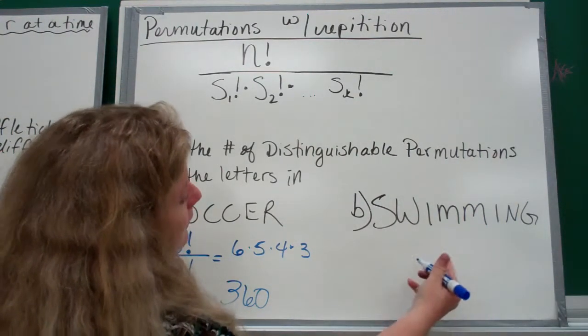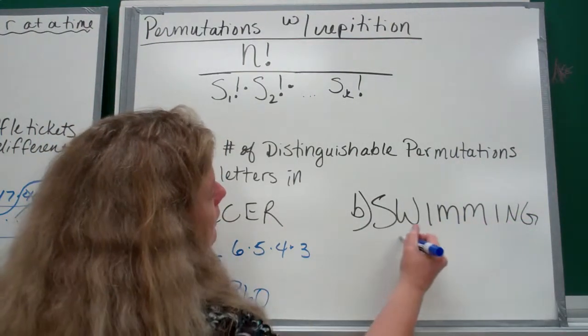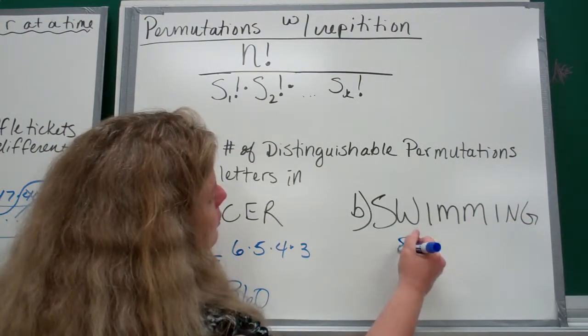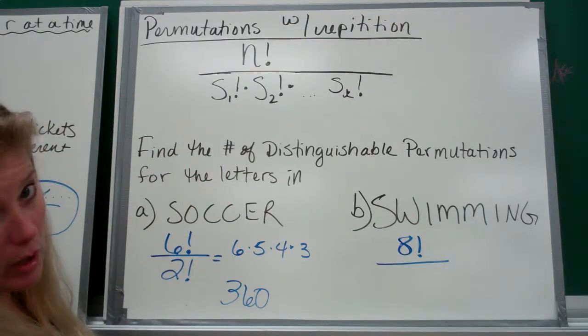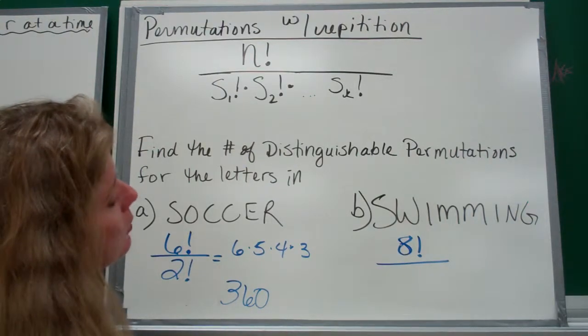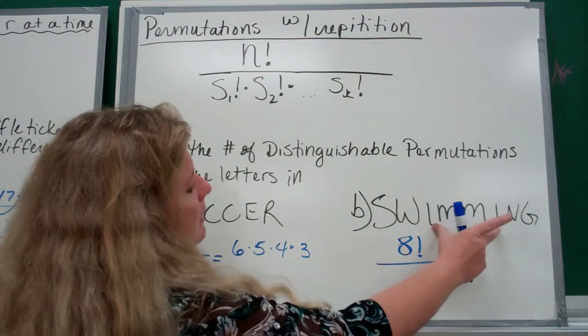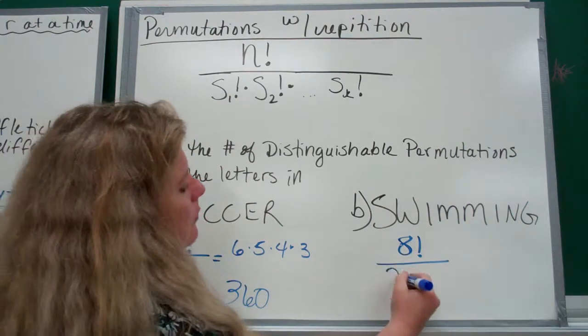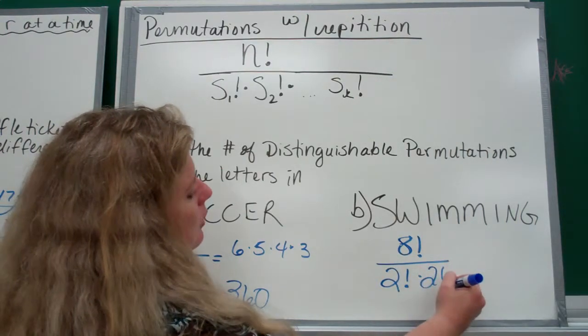Here we have SWIMMING. One, two, three, four, five, six, seven, eight. There's eight letters all together, so that's your numerator. And there's two letters that repeat two times each. I've got two M's and two I's. So I'm going to have to divide that by 2 factorial times 2 factorial.